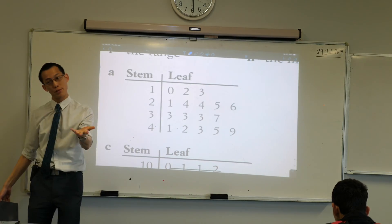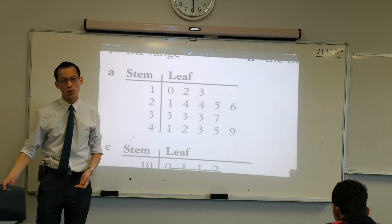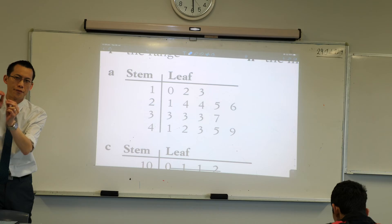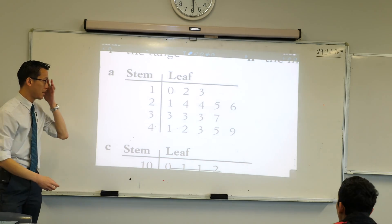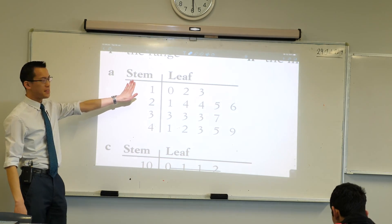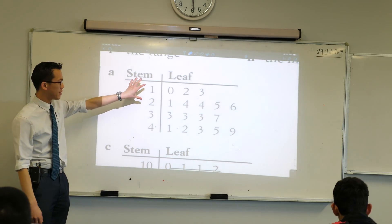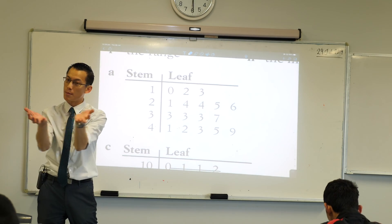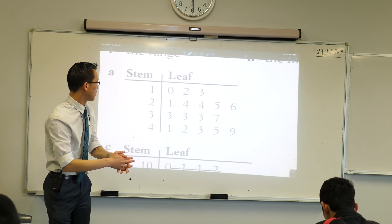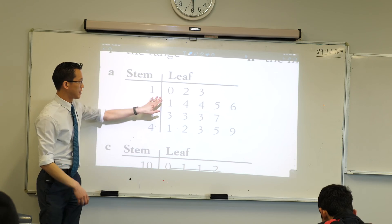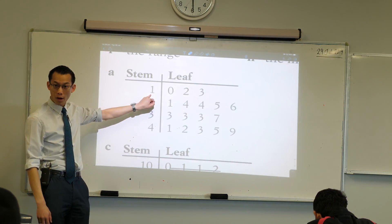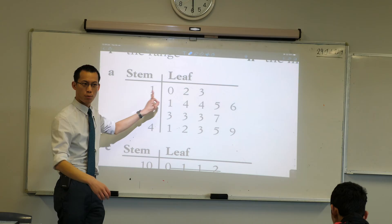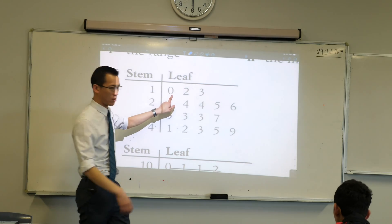This is another way to represent a set of scores, just like a dot plot — same idea but it just gives us a finer sense of detail. The idea here is that you look at the stem and the leaf together and you read them simultaneously to get the score. So let's look at the very first one: the stem starts with a 1 and then the leaf is a 0. So I put a 1 and a 0 together — what number is that?